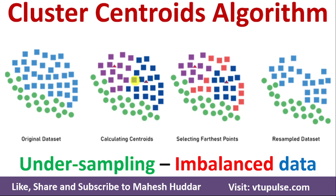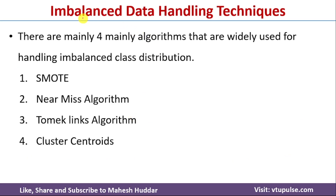Welcome back. In this video I will discuss the Cluster Centroids algorithm for handling imbalanced datasets. It is an under-sampling technique for handling imbalanced data. In the previous videos I have already discussed what balanced and imbalanced datasets are and what problems we face with imbalanced datasets. I have also discussed a few techniques to handle imbalanced datasets in machine learning. In this video I will discuss how we can use Cluster Centroids to handle imbalanced datasets.